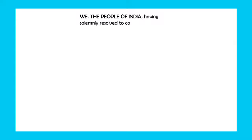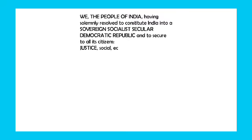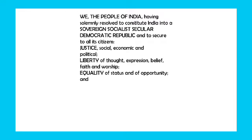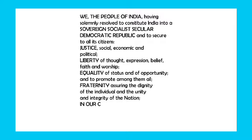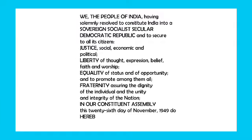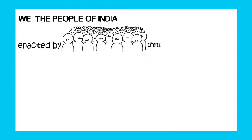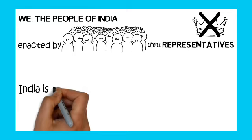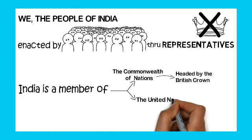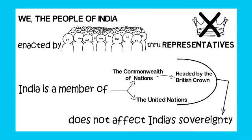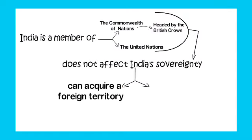Now listen carefully about the preamble text. We the people of India, having solemnly resolved to constitute India into a sovereign, socialist, secular, democratic republic, and to secure to all its citizens justice — social, economic and political; liberty of thought, expression, belief, faith and worship; equality of status and of opportunity; and to promote among them all. This means we are electing our representatives, so we follow democracy, not monarchy.